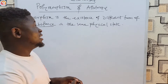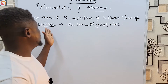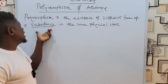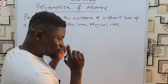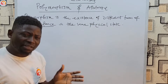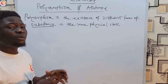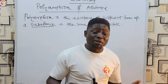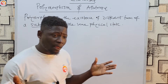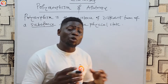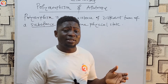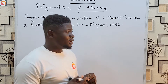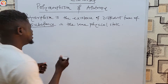The difference between polymorphism and allotropy, as we will see before this class ends, is in the choice of words used. Polymorphism is the existence of different forms of a substance — one substance having different crystalline forms. Polymorphs have the same liquid and gaseous state but do not have the same solid state; they operate differently in the solid form.